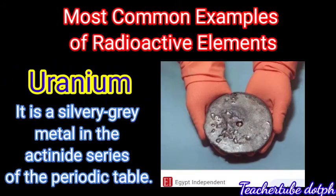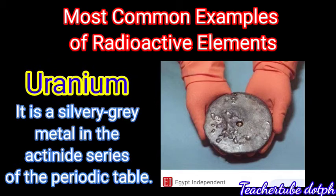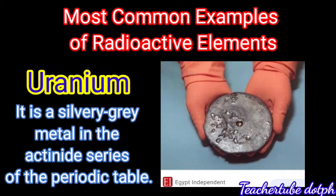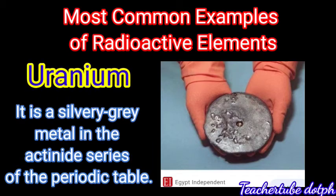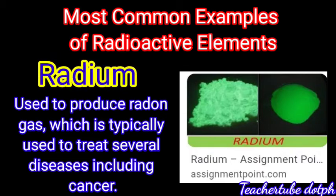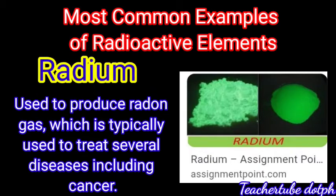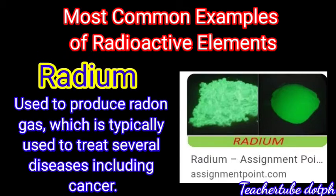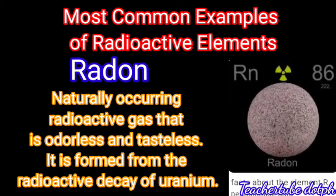Here are the most common examples of radioactive elements. Uranium is a silvery-gray metal in the actinide series of the periodic table. Another example is radium, which is used to produce radon gas, typically used to treat several diseases including cancer. Another example is radon, a naturally occurring radioactive gas that is odorless and tasteless, formed from the radioactive decay of uranium.